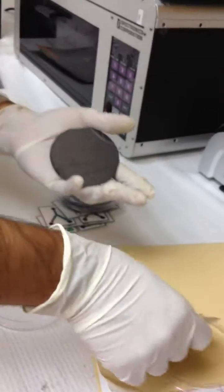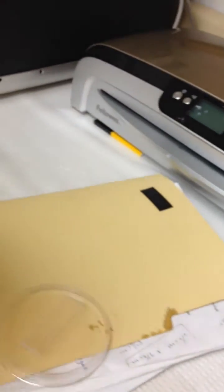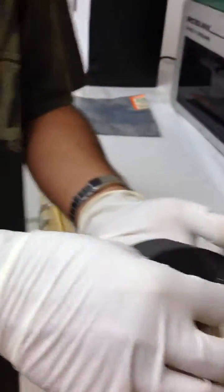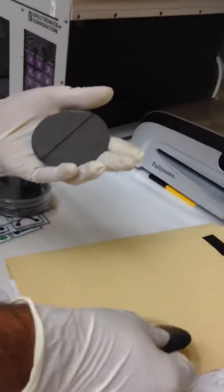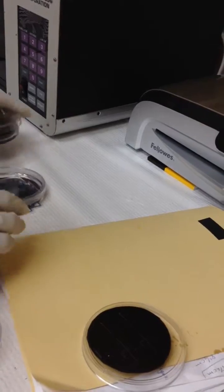Expose it to UV, etch out everything that we don't need, and what you're left with is a pattern. Now on this pattern, you can see we pour in this material PDMS.